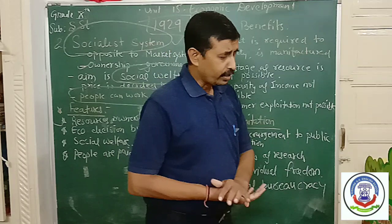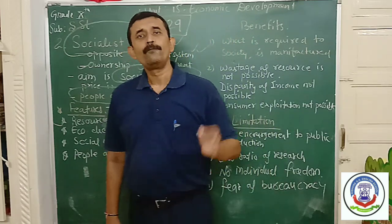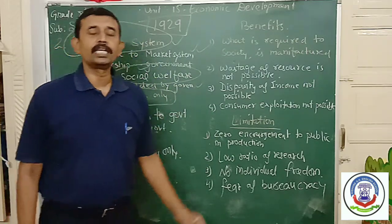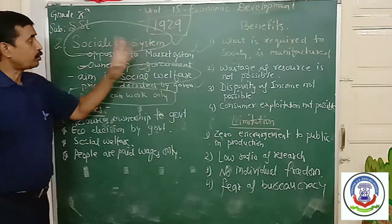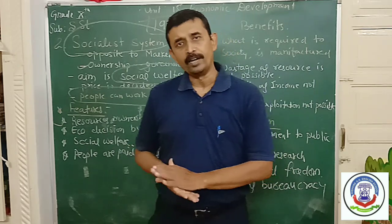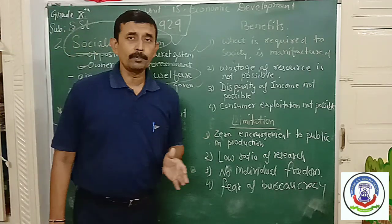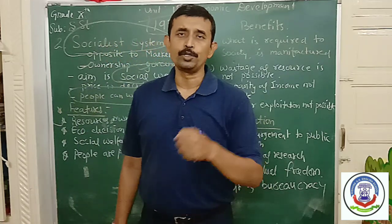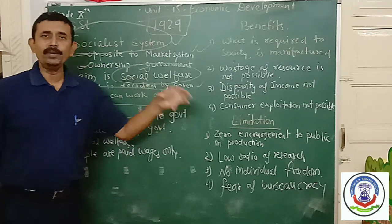In the past, countries like China and Russia adopted the socialist system of economy and made fast economic development in their country. When we saw the great recession which took place in America in 1929 — a failure in the market system — some countries refused to accept the market system, and as a result the socialistic system of economy came into existence.